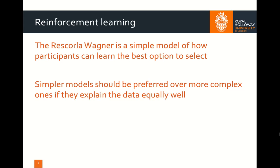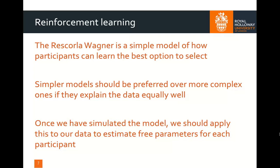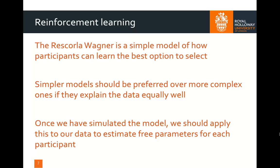The Rescorla-Wagner model provides a really nice explanation of how participants learn to select the best option in a probabilistic reinforcement learning task. We typically say that simpler models should be preferred over more complex ones if they explain the data equally well, because we can often have a model that's really specific to a particular dataset but doesn't generalize well to others. Once we've simulated our data, we should apply this model to our participants' data and estimate their free parameter in order to understand their behavior better. The particular method of doing this I don't have time to go into today, but there are some really nice tutorials I'll highlight at the end of the session.